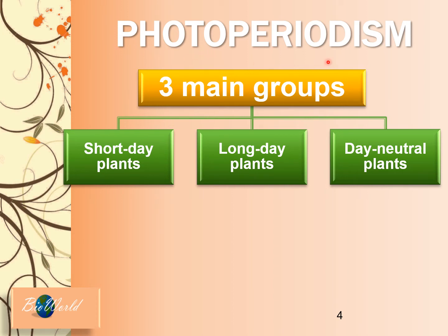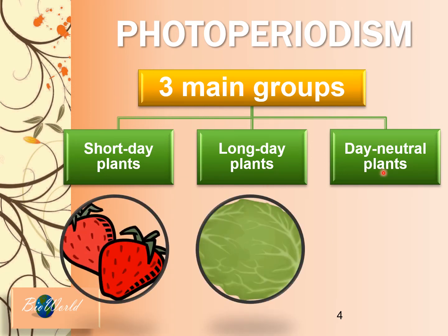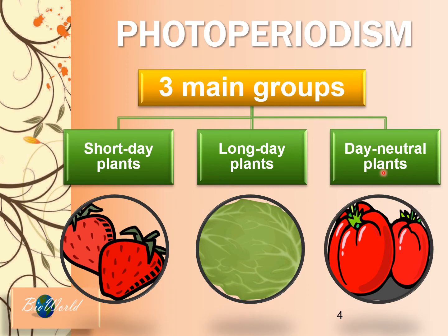Flowering based on photoperiodism helps us group plants into three main groups: short day plants — for example, strawberries; long day plants — for example, cabbage; and day neutral plants — for example, tomatoes. From the titles you can already guess: short day plants require a relatively shorter daylight, long day plants require a relatively longer daylight, and day neutral plants do not require any specific condition of daylight or night to flower.